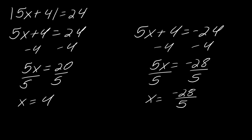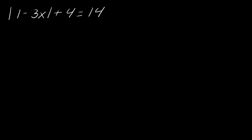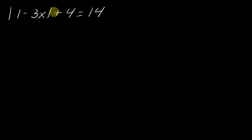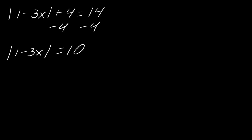Now I want to talk about other situations that can occur. Here I have the absolute value of 1 minus 3x, plus 4, equals 14. The rule is very specific: your absolute value has to be isolated. In this situation the absolute value is not isolated because of the plus 4. So before we separate this into two equations, we have to subtract 4 first. Now the absolute value is isolated and equals 10.